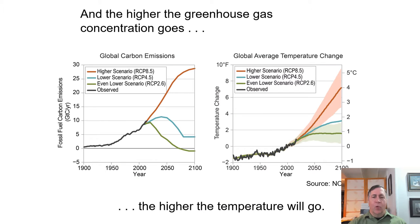The more greenhouse gases in the atmosphere, the higher the temperatures. If we stop burning fossil fuels and destroying forests, we can limit the increase to 1–2 degrees Celsius. Otherwise, it could climb up to 4–5 degrees Celsius, which would have devastating consequences.